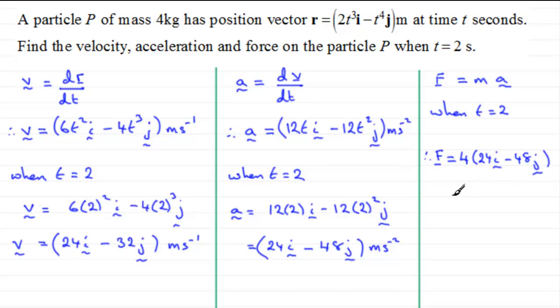And working this out, we end up with 4 times 24, which is 96i, and then 4 lots of negative 48 is going to be minus 192j. And again, don't forget the units here, we're looking at the force which is measured in newtons.